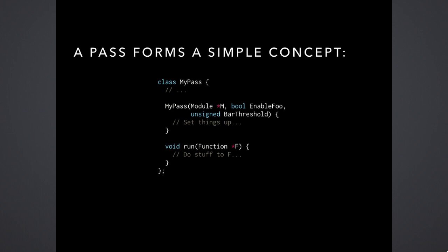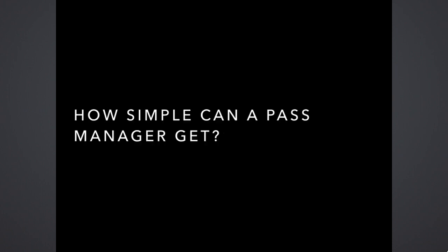I started off with the simplest idea of a pass: you have a class, it has a constructor that sets things up, and it has a run method that accepts some unit of IR — in this case a function — and does something to that function. Couldn't get much simpler than this. The question is, how close to this could we keep everything and still address the use cases we have for the pass manager? This is almost literally what a pass looked like on the first iteration of the new pass manager when I first checked in.